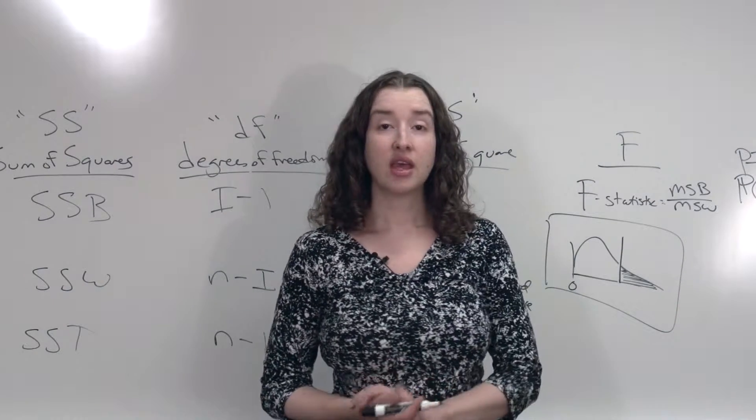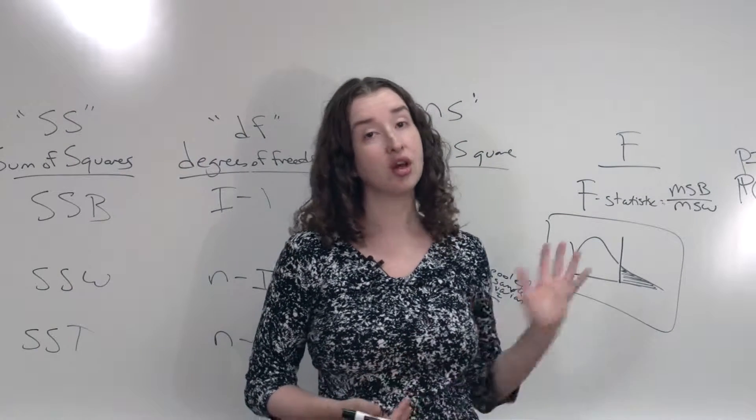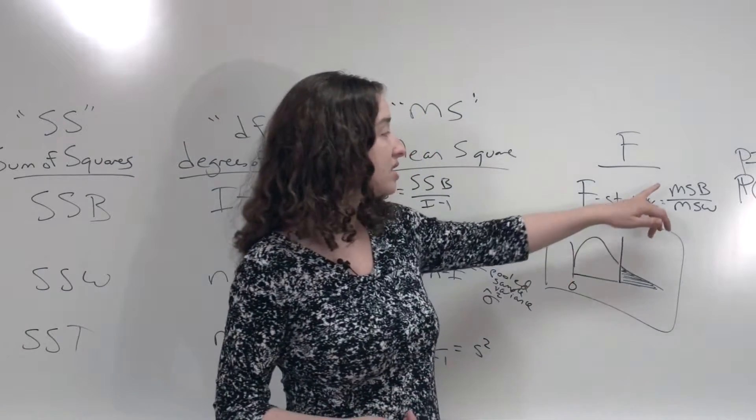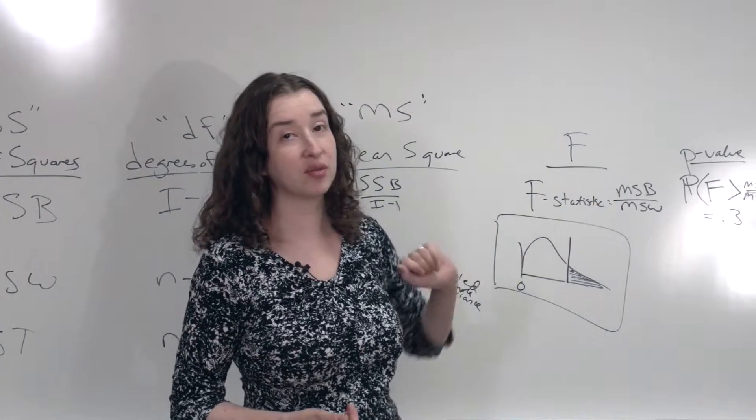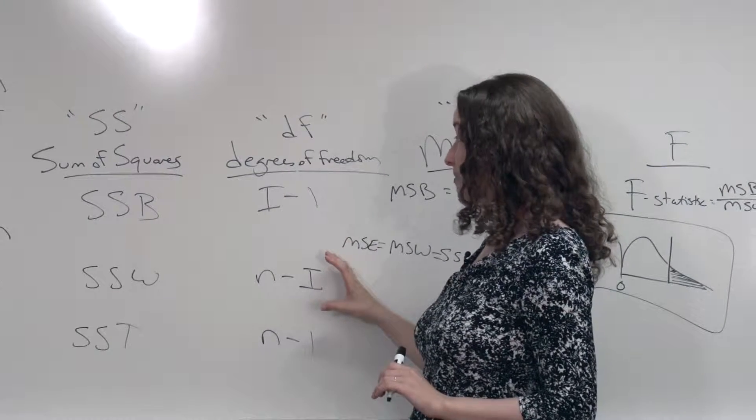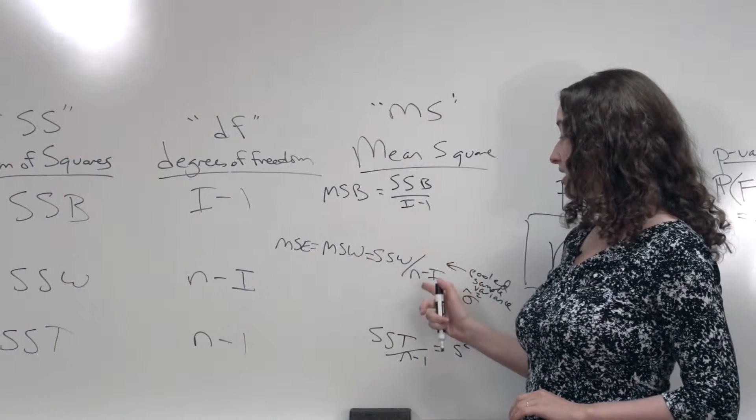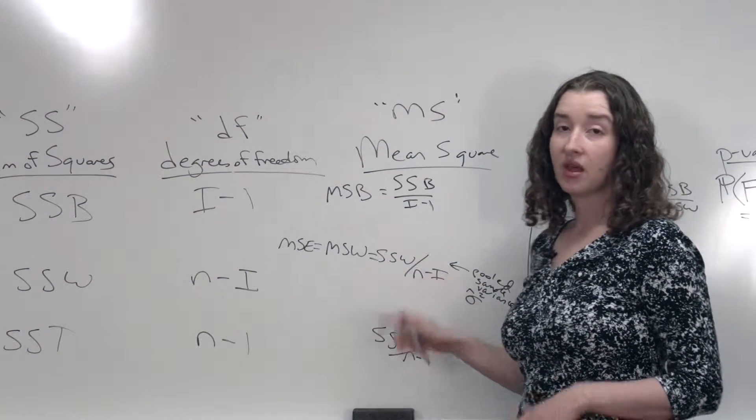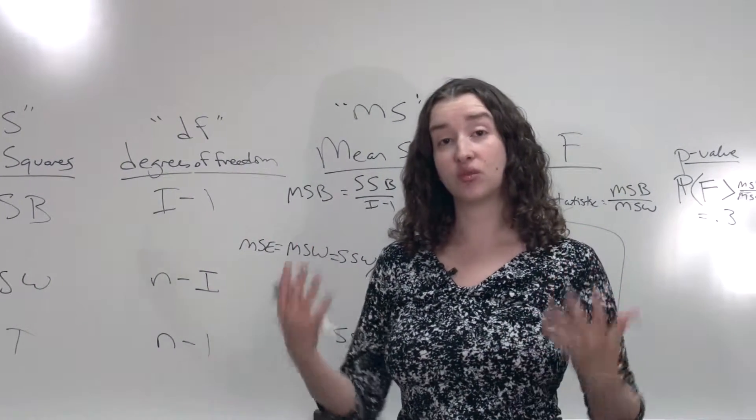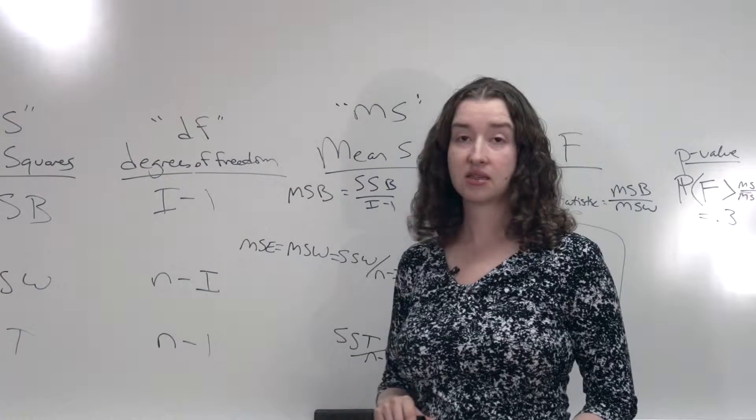Similarly here, if you give me two pieces of information, you'll have specified the f-distribution that I should use as my reference distribution for this particular test. The two pieces of information I need are called degrees of freedom numerator and degrees of freedom denominator. Where am I going to find those? Right here. i-1, n-i. Where did I get those from? Well, my f-statistic is the ratio of something that has an i-1 in it and something that has an n-i in it. The reference distribution that we use for this particular f-test is the f-distribution with i-1, n-i degrees of freedom.